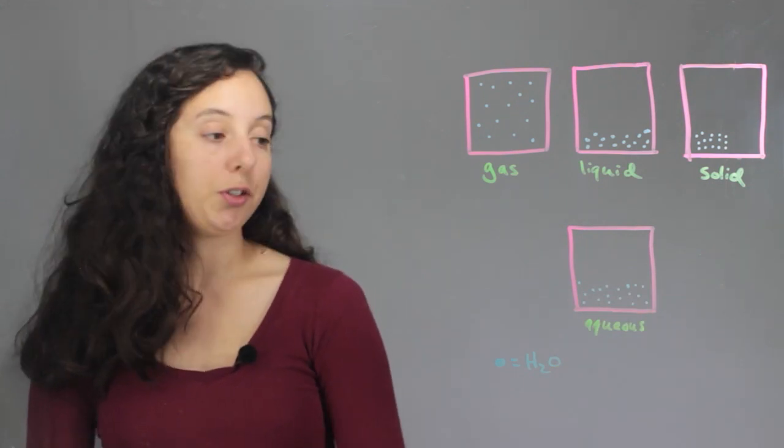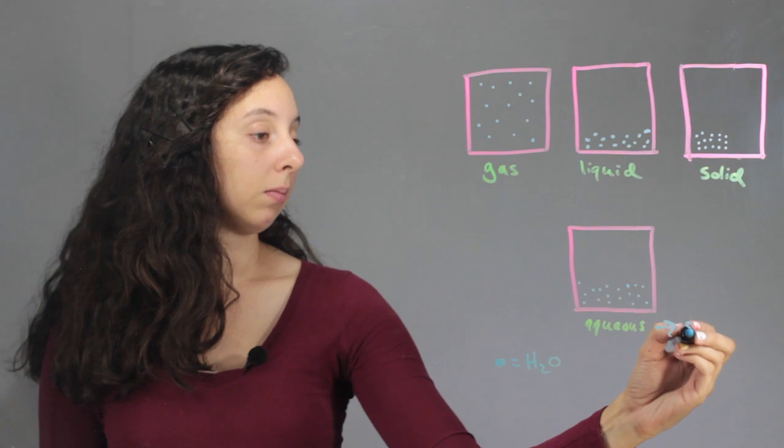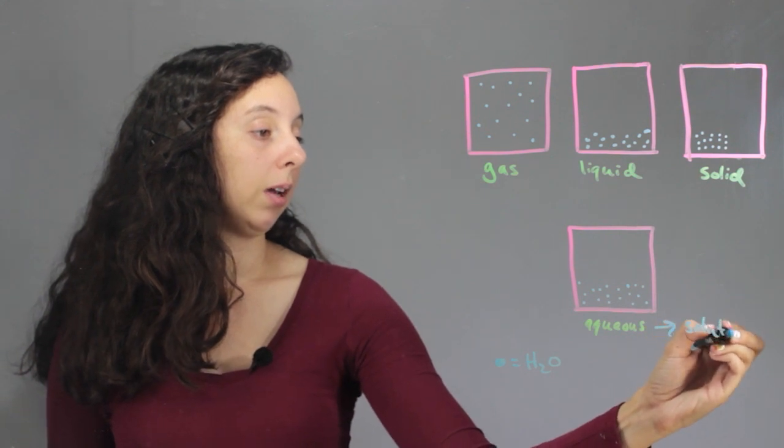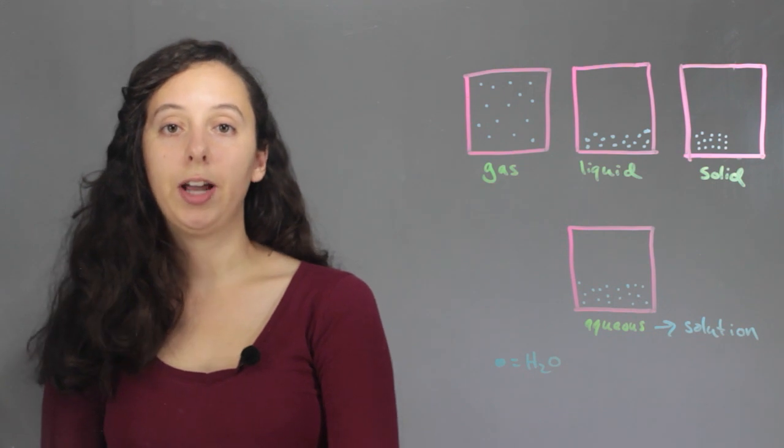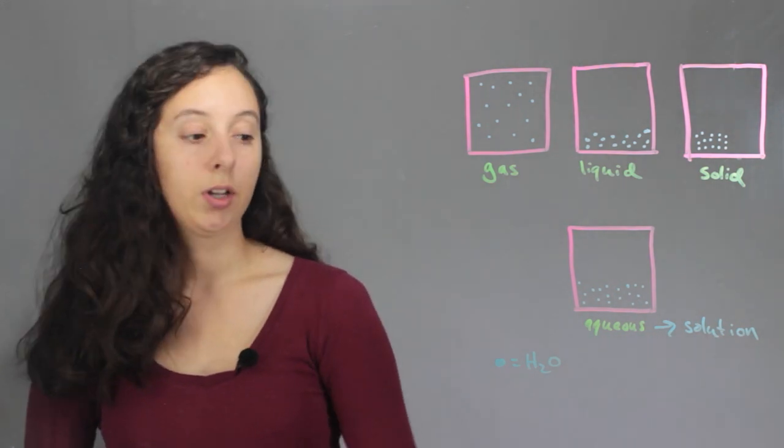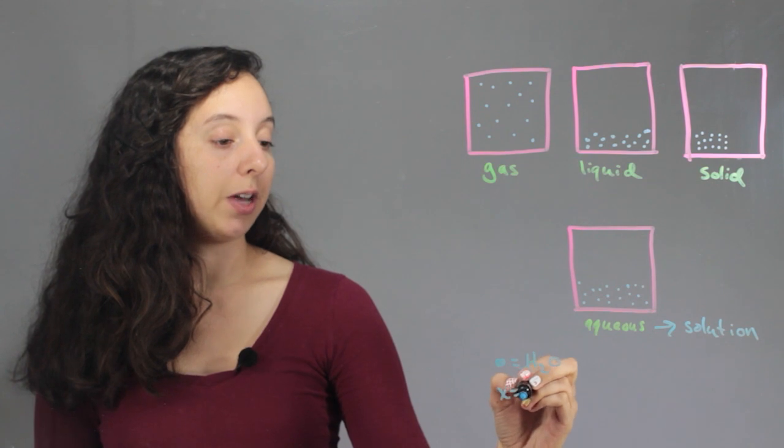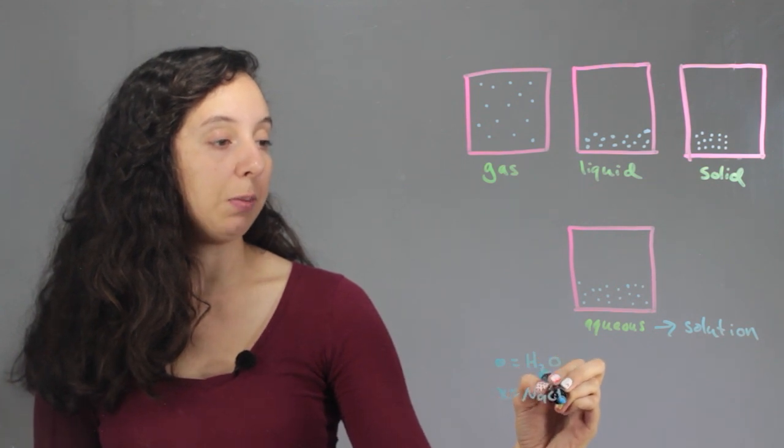And aqueous refers to a solution. And a solution is something that is not pure. So we're going to have to add another type of molecule. Let's go ahead and add x's, which will represent sodium chloride or table salt.